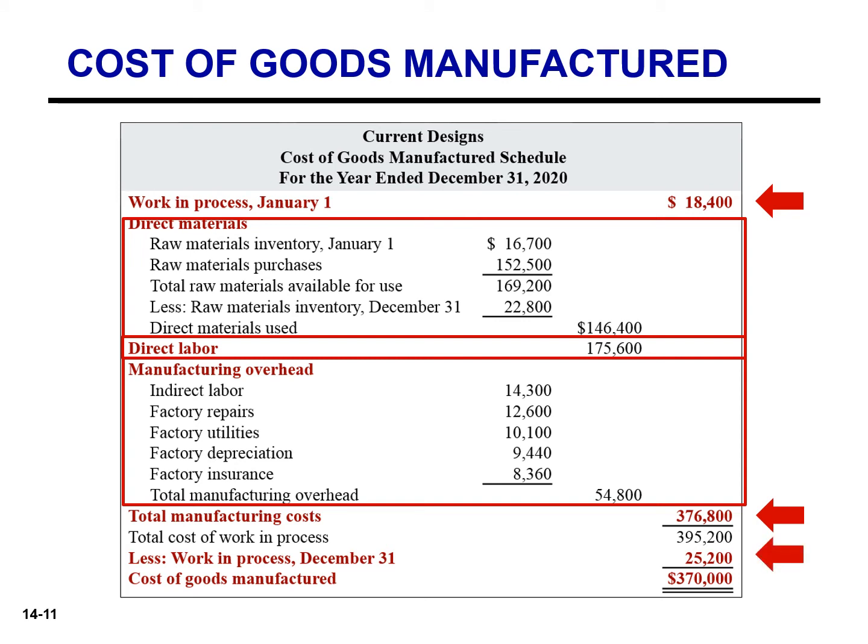At the end of the year, Current Designs may have some kayaks that are only partially complete. The cost of these units becomes the cost of the ending work in process inventory — in this example, $25,200. To find the cost of goods manufactured, we simply subtract this cost from the total cost of work in process. The cost of goods manufactured is $370,000.